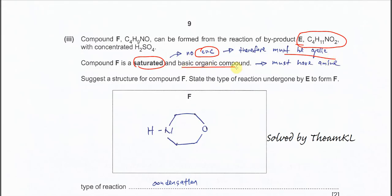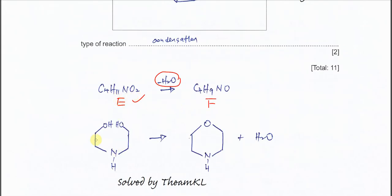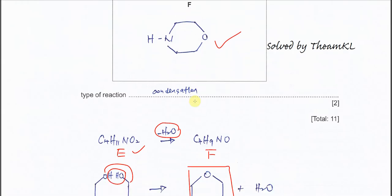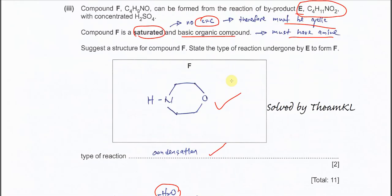Compound F must contain an amine group — these are the two key requirements. Starting from byproduct E, a condensation reaction removes H₂O: the oxygen forms a new bond with the adjacent carbon, creating a cyclic structure. This cyclic structure is compound F. The type of reaction is condensation. Draw this cyclic structure as your final answer.